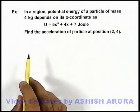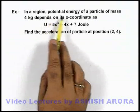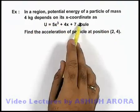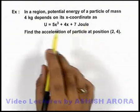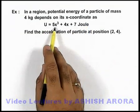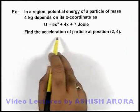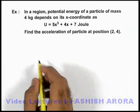In this example, we are asked that in a region, potential energy of a particle of mass 4 kg depends on its x-coordinate as U = 5x³ + 4x + 7 Joule. We are required to find the acceleration of particle at position (2, 4).